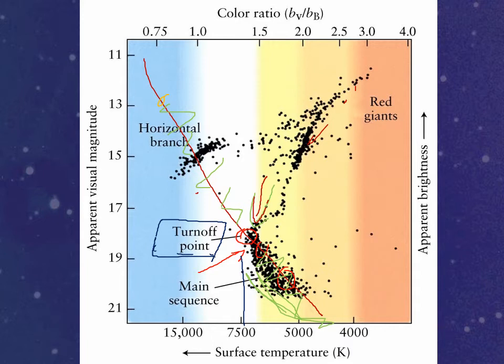You determine cluster age by looking at the turnoff point of the HR diagram — measure every star you can find in the star cluster and plot them on the HR diagram. Now, there are a few stars that don't behave right: they are too blue to be on the HR diagram. They should have evolved off — they're too massive. We call those blue stragglers.